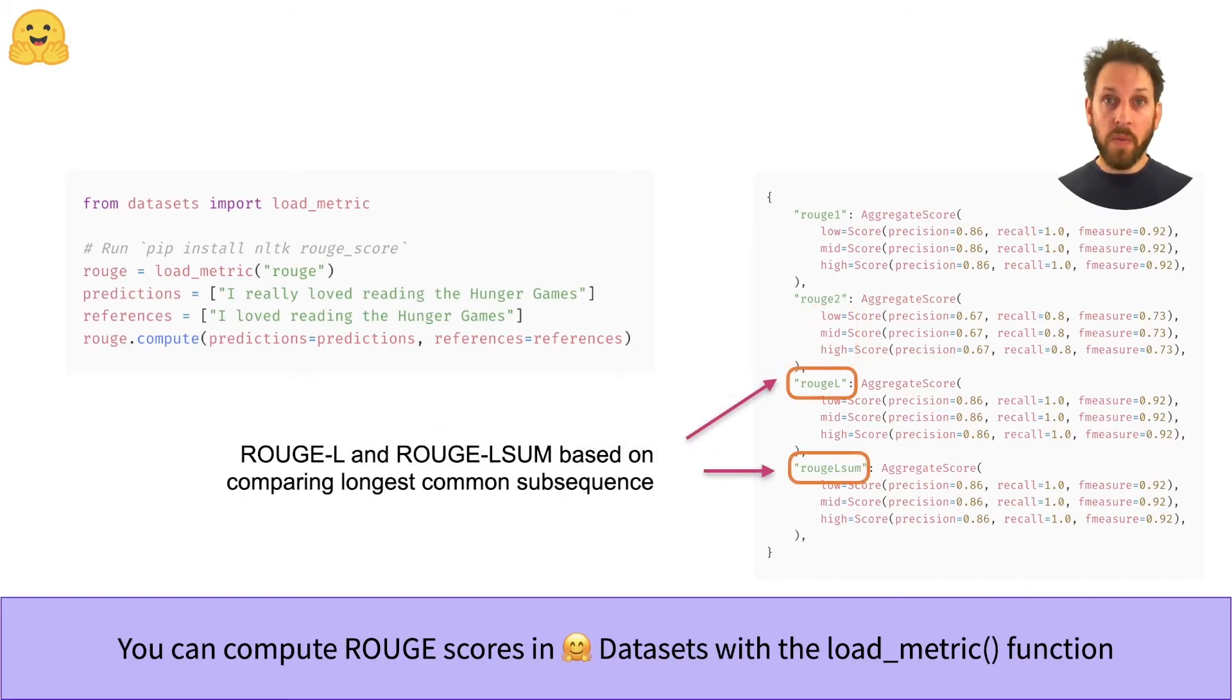The second thing to notice is that we have four types of ROUGE score. We've already seen ROUGE-1, ROUGE-2, and ROUGE-L, so what is ROUGE-L sum? Well, the sum in ROUGE-L sum refers to the fact that this metric is computed over a whole summary, while ROUGE-L is computed as the average over individual sentences.